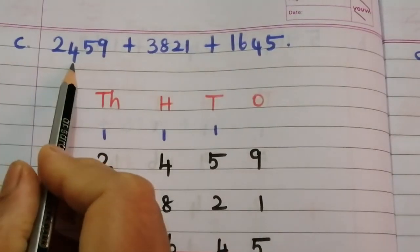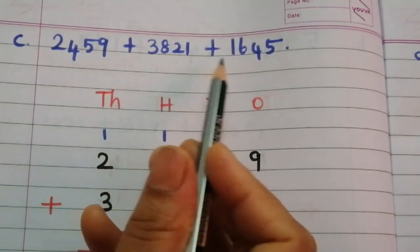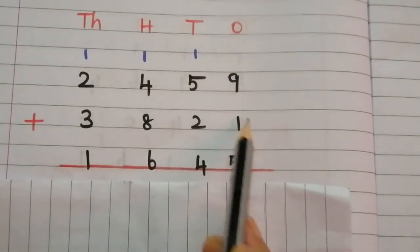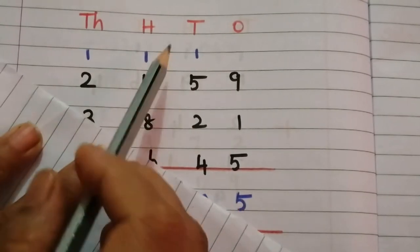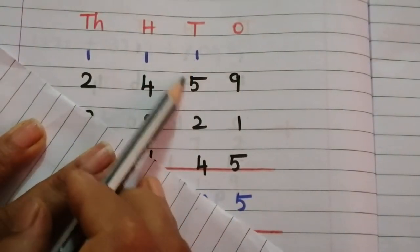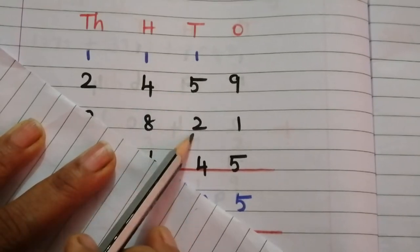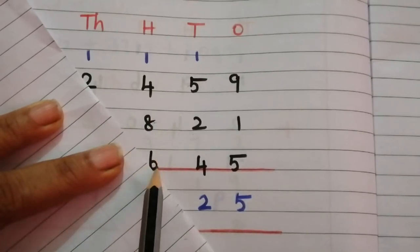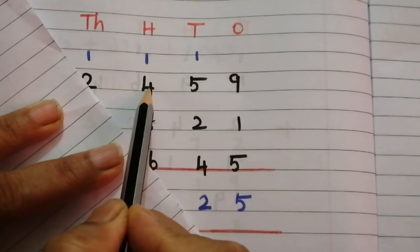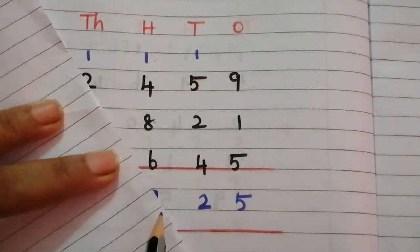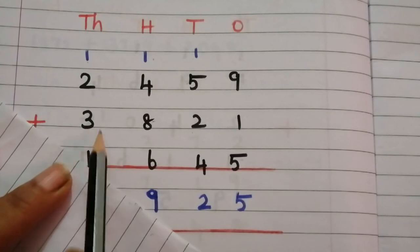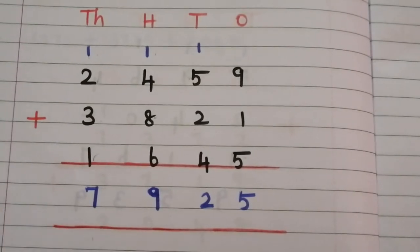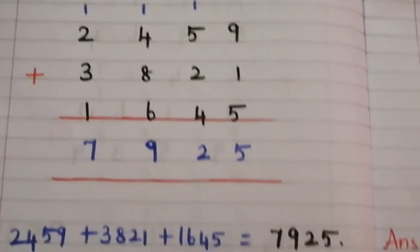Problem C: 2,459 plus 3,821 plus 1,645. Ones: 9 plus 1 is 10, 10 plus 5 is 15 — put 5, carry 1. Tens: 5 plus 2 is 7, 7 plus 1 is 8 — oops, 5 plus 1 is 6, 6 plus 2 is 8, 8 plus 4 is 12 — put 2, carry 1. Hundreds: 8 plus 6 is 14, 14 plus 4 is 18, 18 plus 1 is 19 — put 9, carry 1. Thousands: 3 plus 1 is 4, 4 plus 2 is 6, 6 plus 1 is 7. The answer is 7,925.